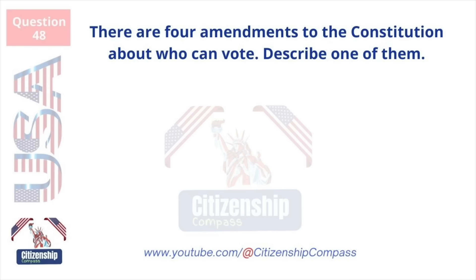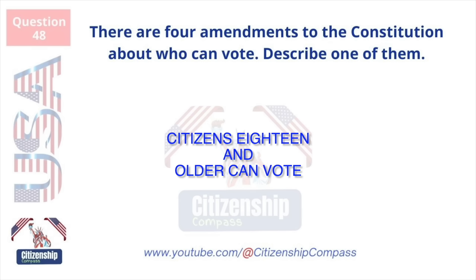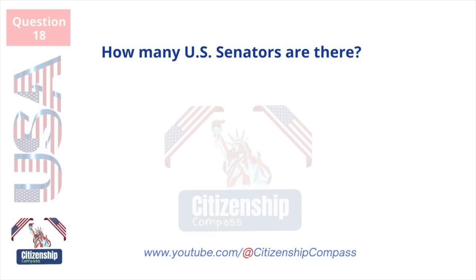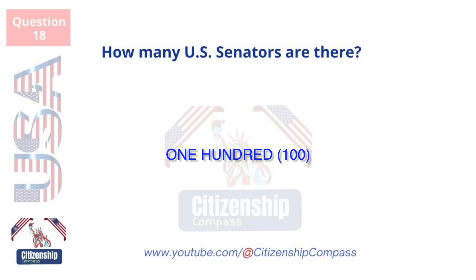There are four amendments to the Constitution about who can vote. Describe one of them. Citizens 18 and older can vote. How many U.S. senators are there? One hundred.